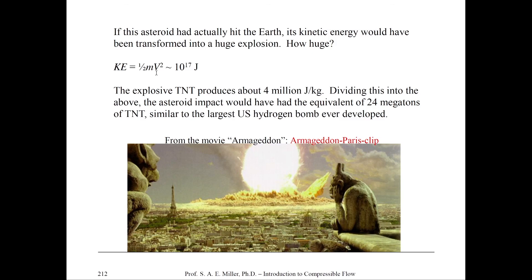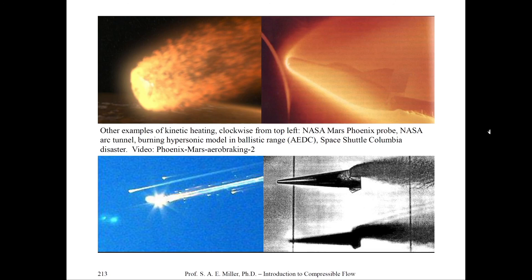Here are some examples of high-speed flow and re-entry: the Mars Phoenix probe in an arc tunnel, burning of a hypersonic model in the AEDC Arnold Engineering Development Center, and the Space Shuttle Columbia disaster. These illustrate the immense energy of high Mach number flows. Do not confuse the shock wave around a re-entry vehicle body with a Mach wave — that is a very strong shock wave, which we'll discuss later.